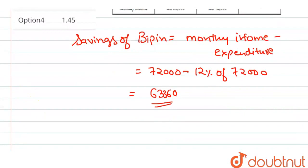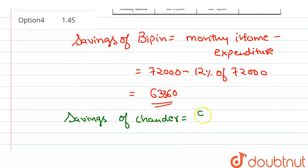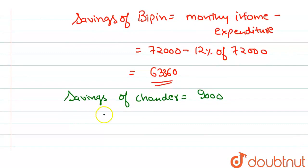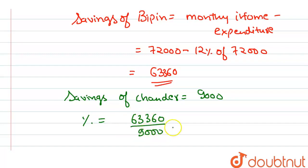And savings of Chandra हमें क्या given है? Savings of Chandra यह हमें given है 9,000 के equal. हमें बताना है कितना percent है? तो हमारा required percentage क्या आएगा? यह आएगा हमारा 63,360 divided by 9,000 into 100 के equal. तो यह value आएगी हमारी 704% के equal.